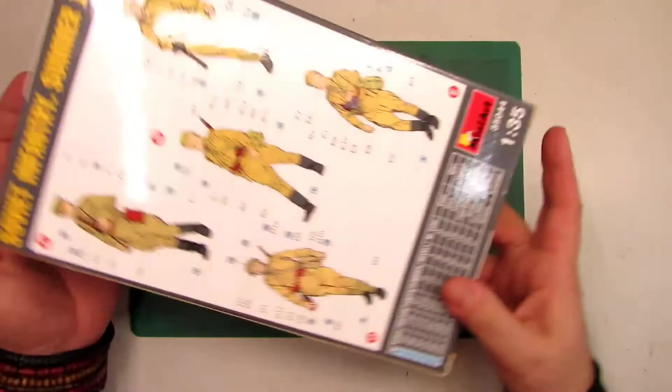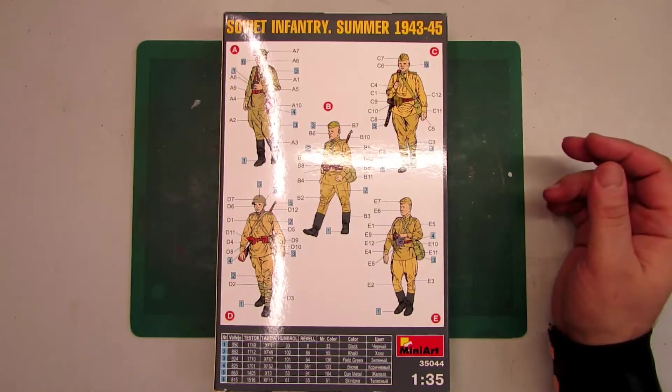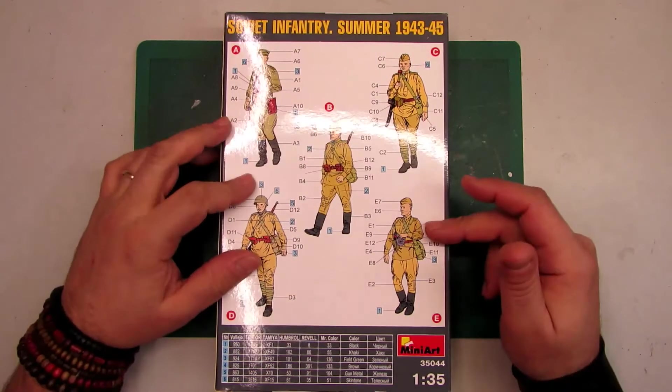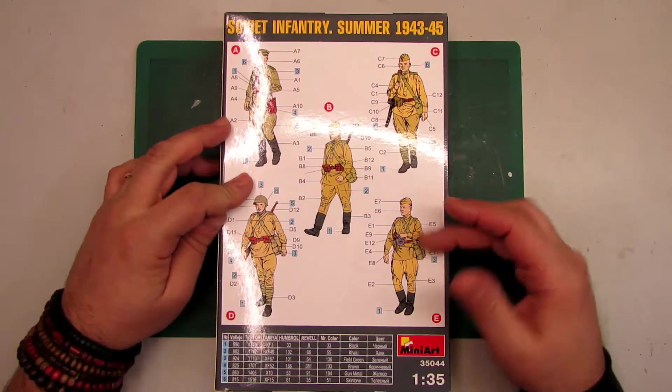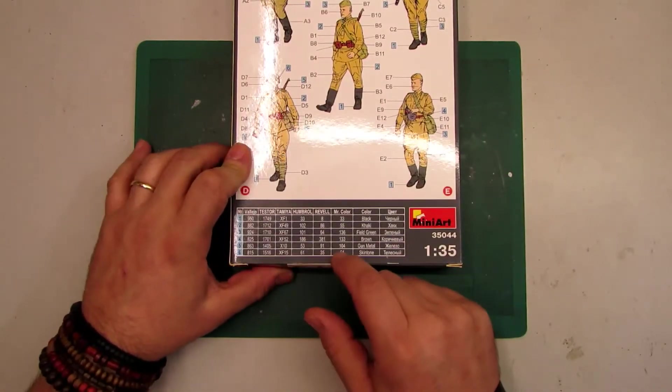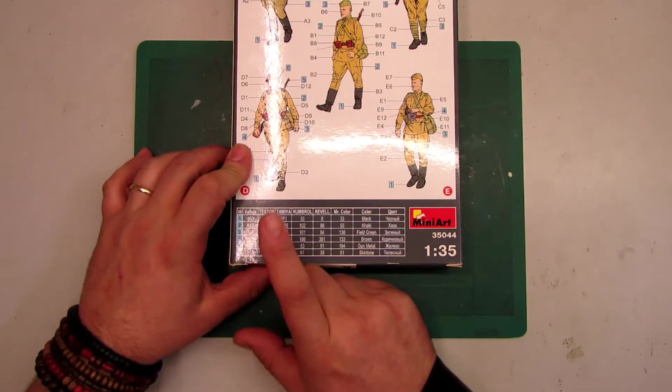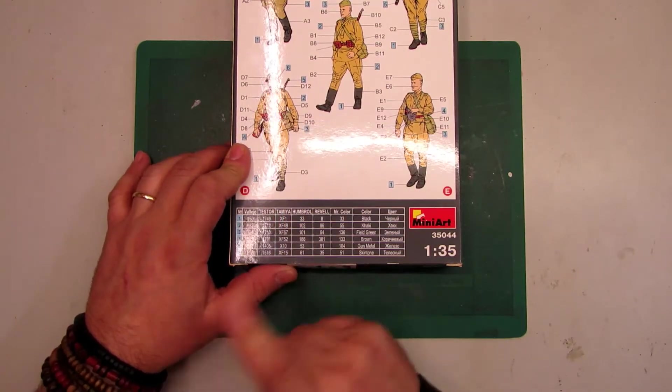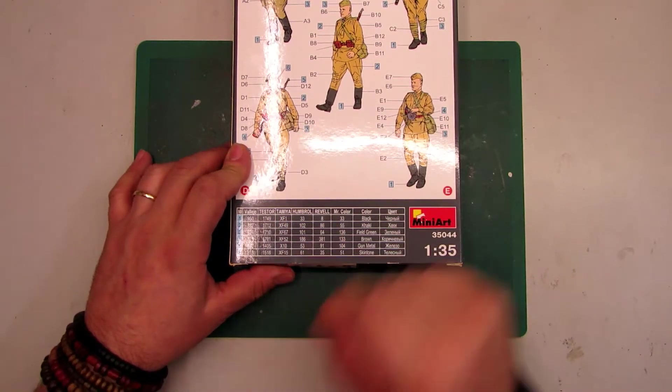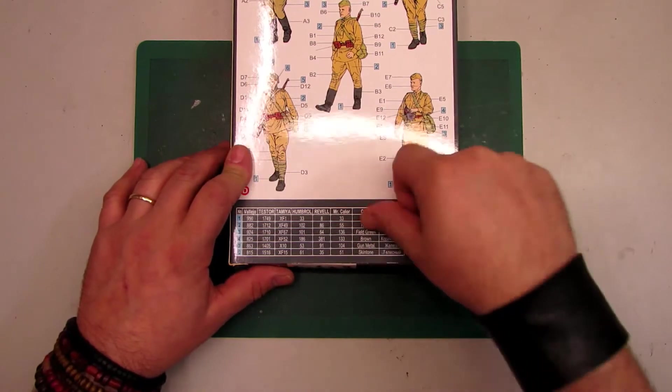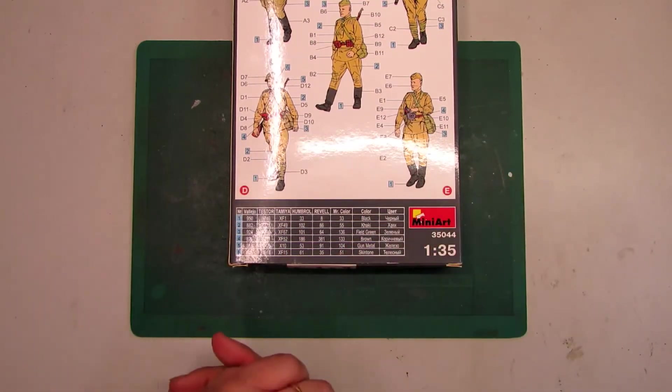Here on the back we've got the scheme of how to build it and the paint work. Normally they put here paints from Vallejo, Testors, Tamiya, Humbrol, Revell, Mr. Color, and the names of the colors.